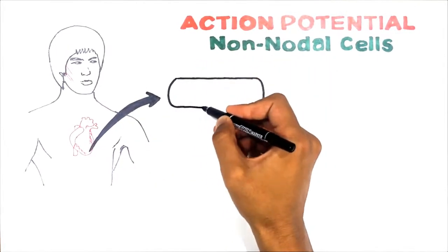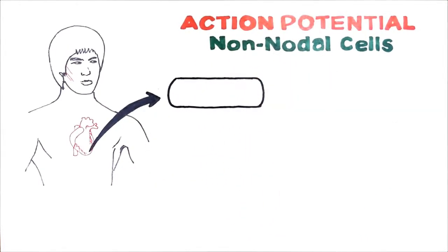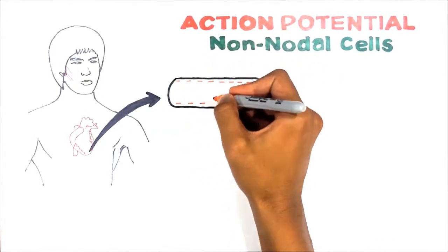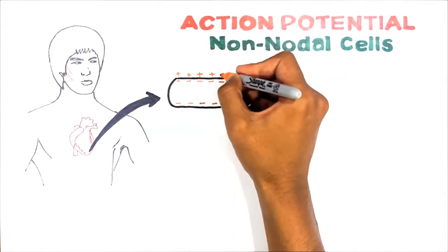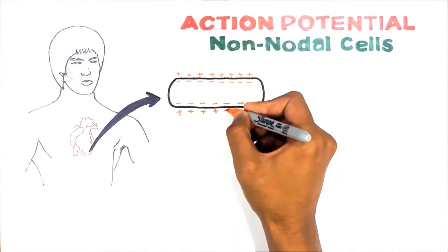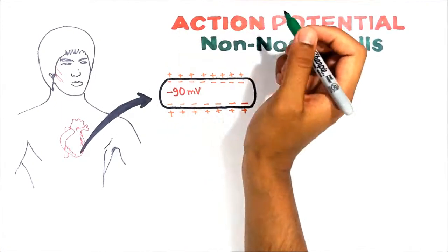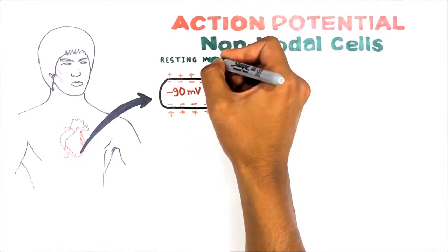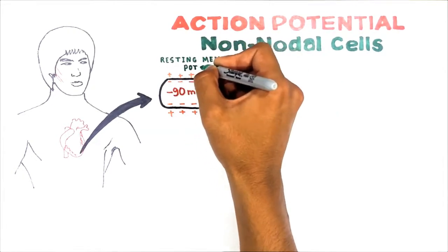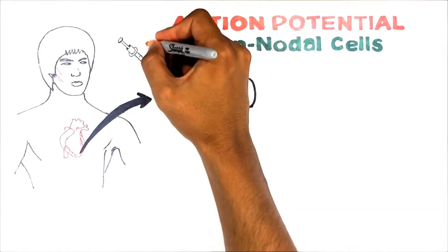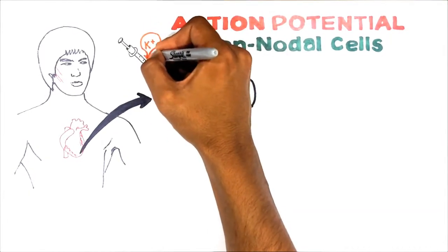Here is the resting cardiac myocyte. It is very important to note that at rest, the interior of the cell is negative when compared to the exterior of the cell — it is minus 90 mV. This charge difference across the membrane at rest is called the resting membrane potential.